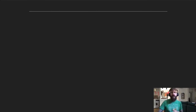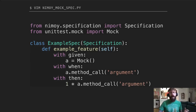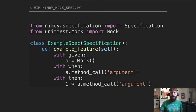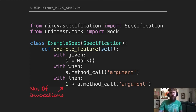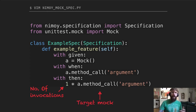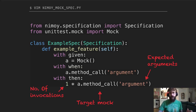What happens if you want to do more powerful mock testing — for example, asserting how many times a method was called? Nimoy gives you an assertion template. In the then-block, you write an expression like: one times the method call with an argument. This is a mock assertion with two vectors: the first vector is the number of invocations — 'one times' means we expect the method to be called once — and the second vector is the argument. So you write 'one times method_call', and then assert the argument equals string 'argument'. This saves you from calling call_count and return_value separately.